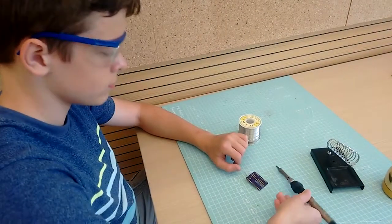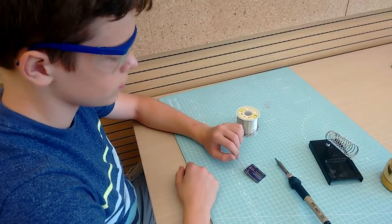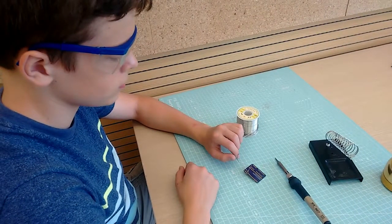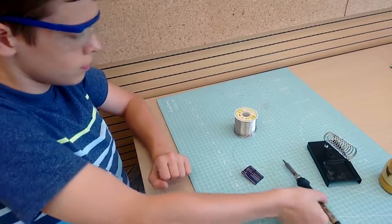When you're done soldering, don't set the iron on the table. It could roll onto something flammable and start a fire, or it could roll off the table onto somebody's leg and burn them. Always put it back in the stand.